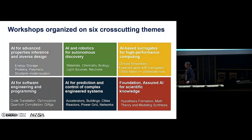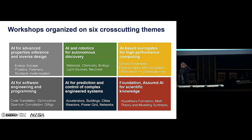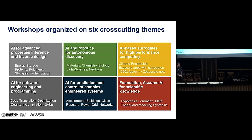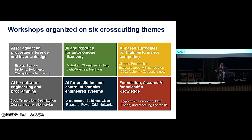We redid the workshop series, organized very differently. We said the future is not a machine-learned model for every dataset that every researcher has in their pocket — there aren't enough people to build those models, and you're not going to have or maintain a million models. Instead, what we're seeing is a handful of super-powerful models that can do more than one thing, trained on large corpora of data, not a single dataset. We asked: how does this affect science? We came up with six kinds of activities that AI could be doing in the future, and organized teams of scientists around those six buckets.